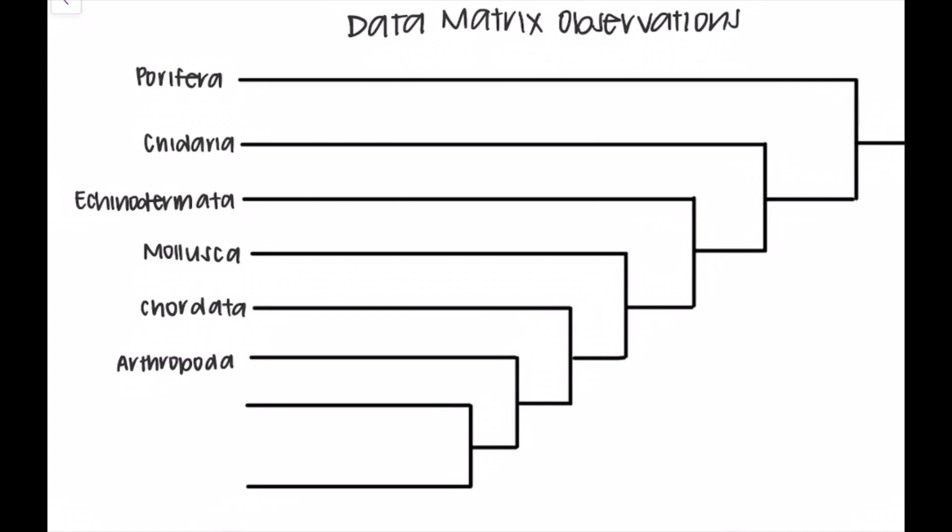This is the data matrix observations tree that we created. As this tree shows, Annelida and Sipuncula have the closest relationship among the taxon.